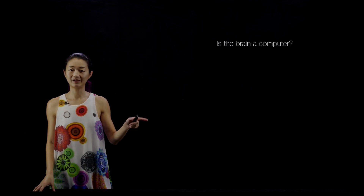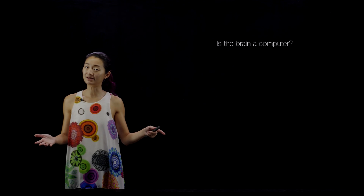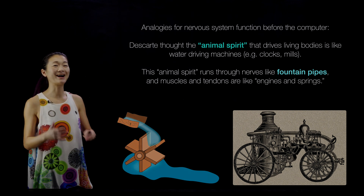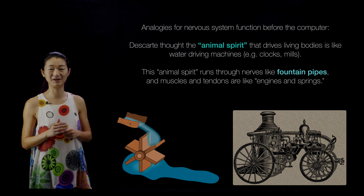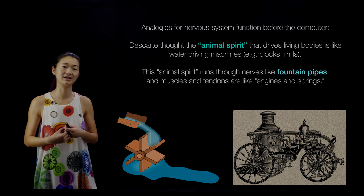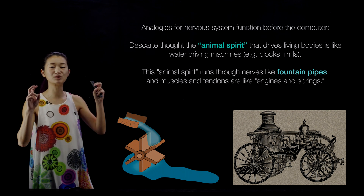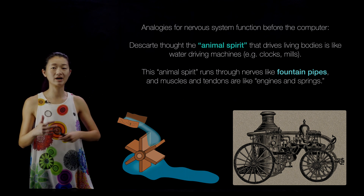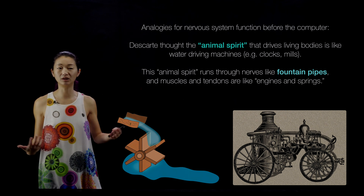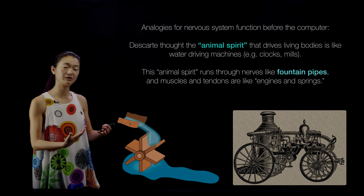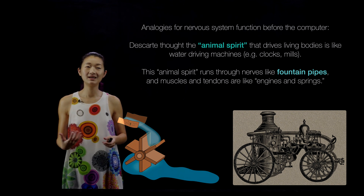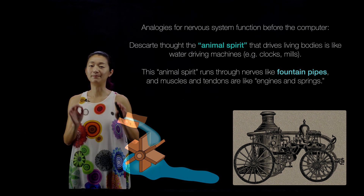It sounds obvious now that we can do these things, but computers have not existed for that long — neuroscience predates modern computers. So how did people think about brains before computers? Not surprisingly, people had all kinds of analogies. Descartes had a water-steam engine analogy for brains. He thought there was something called an animal spirit driving living bodies like water driving machines, with his mental image being more like a water-driven clock or mill. This animal spirit ran through nerves like fountain pipes, and the muscles and tendons were like engines and springs.